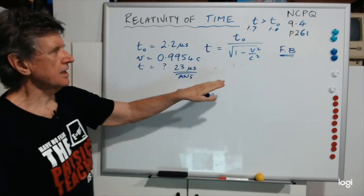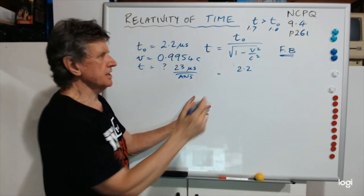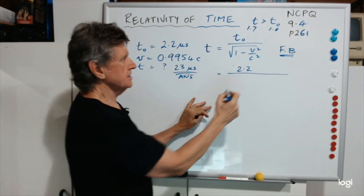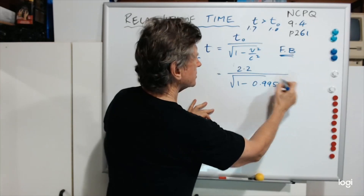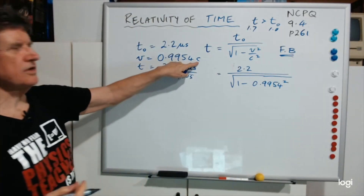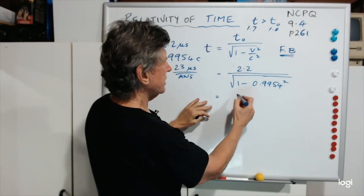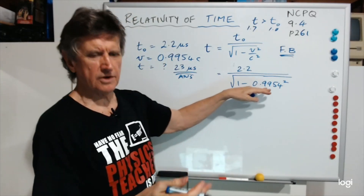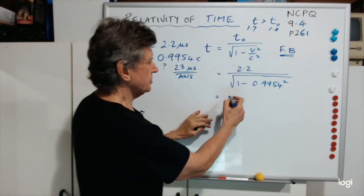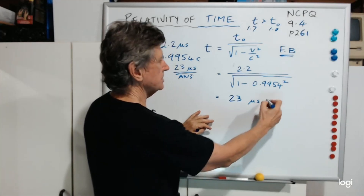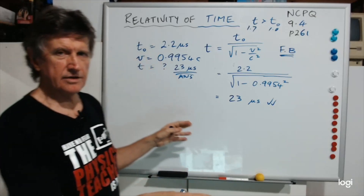Now if you remember, I got a value of 23 microseconds as the answer. Let's check this out. T0 is 2.2 — I'm going to work in microseconds. Then it's 1 minus 0.9954 squared. Because it's in units of C, the C's cancel out, so you square that number, take it away from 1, take the square root, and divide it into 2.2 — you get 23 microseconds. That agrees with the value I told you earlier.